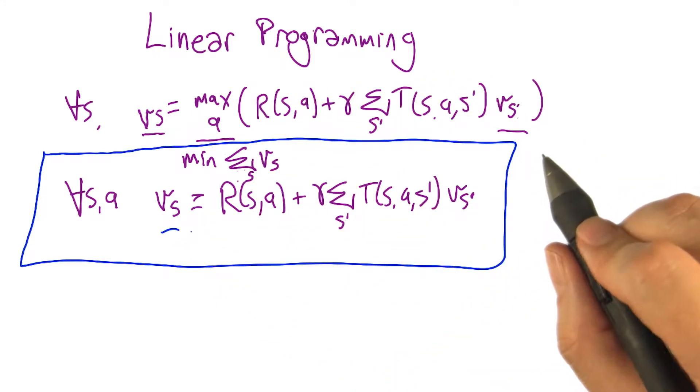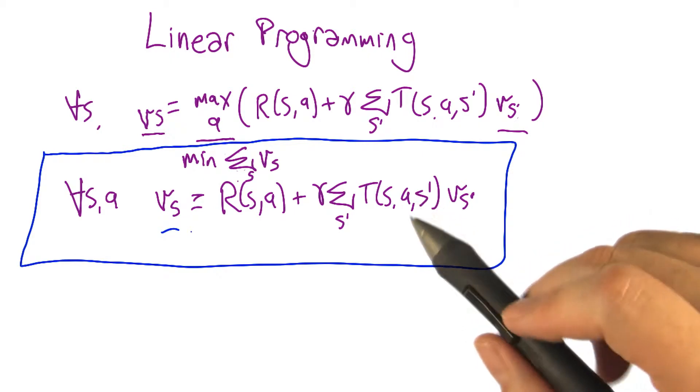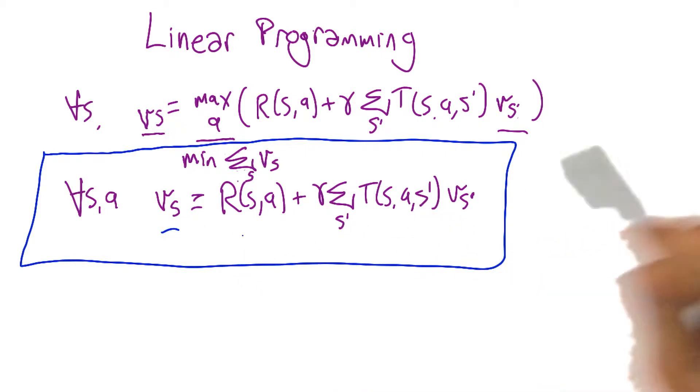How do we get our policy from that? We just choose the action that always, in expectation gives you the best value, just sort of one step look ahead. Yeah, we choose the greedy policy with respect to that optimal value function.